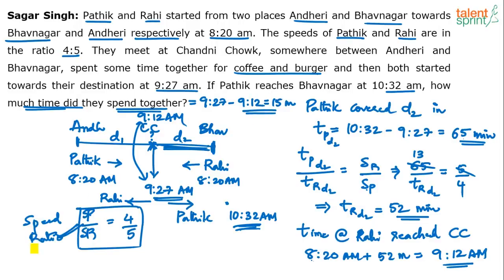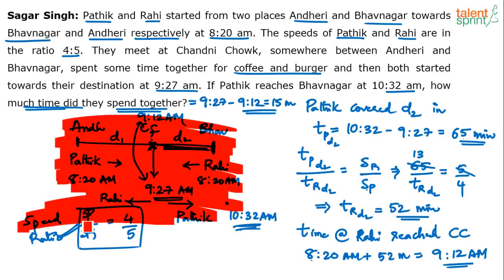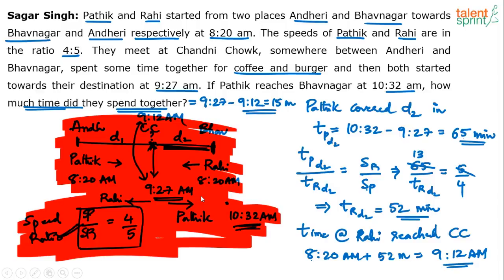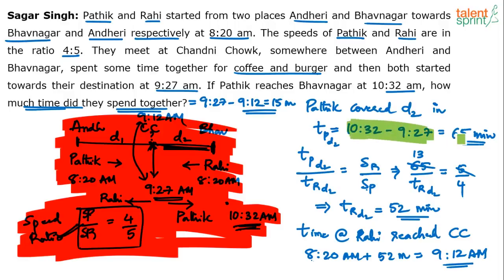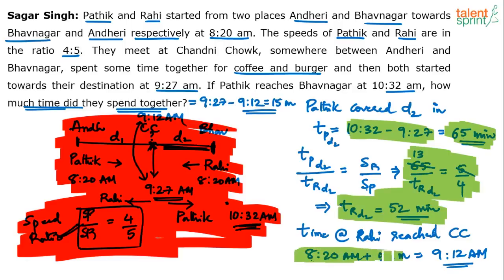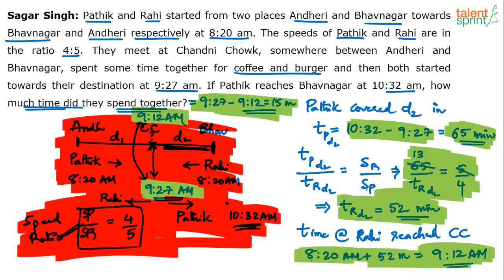15 minutes is the final answer. Please don't go by the length of the explanation — you need not put all these steps on paper. The key steps are: 10:32 minus 9:27 gives 65 minutes; speed ratio gives Rahi's time as 52 minutes; 8:20 plus 52 minutes gives 9:12; difference between 9:12 and 9:27 is 15 minutes. You can arrive at the answer in about 45 to 60 seconds.